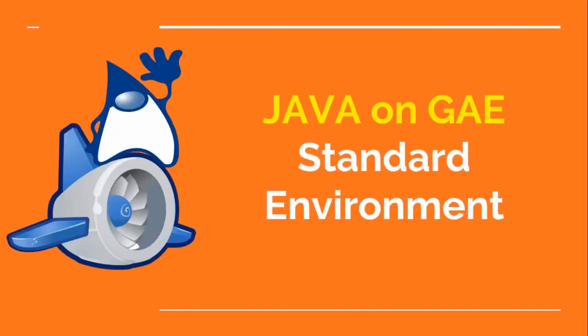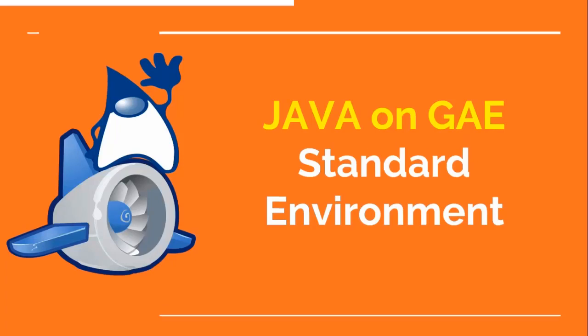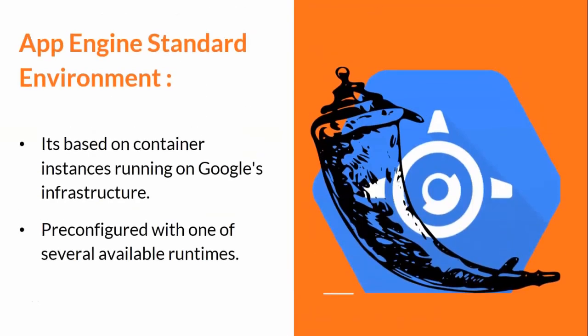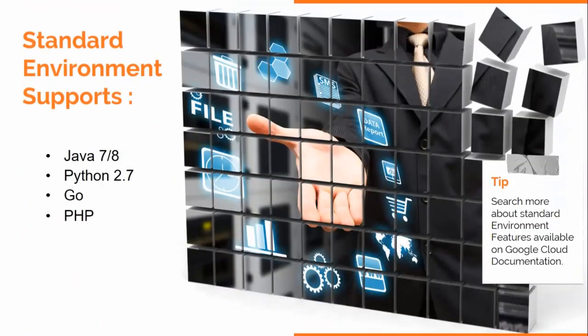In this video we are going to talk about the Java App Engine standard environment. The standard environment is based on container instances running on Google infrastructure. These containers are pre-configured with one or more available runtimes: Java 7, Java 8, Python 2.7, Go, and PHP.